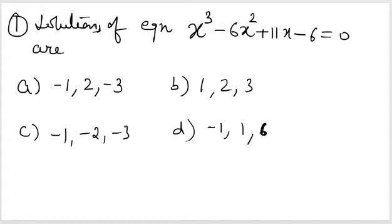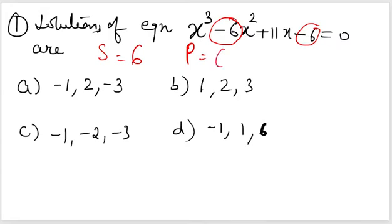Let's see the first example — a multiple choice question with a cubic equation and given options. The strategy: quickly find the sum and product of roots. Since the coefficient of x³ is one, I take the opposite sign of the x² coefficient to get the sum, which is positive 6. I take the opposite sign of the constant to get the product, which is also 6. Looking at the options: one option gives sum 1+2+3 = 6 and product 1×2×3 = 6. That is the answer.